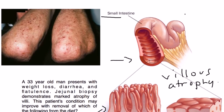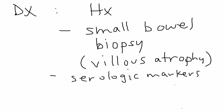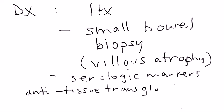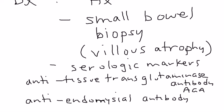There are also tumor markers that will appear on licensing exams. The first is the anti-tissue transglutaminase antibody, sometimes abbreviated AGA. The second is the endomysial antibody, abbreviated EMA. These are serologic markers that can be detected in a person with celiac disease.